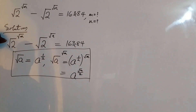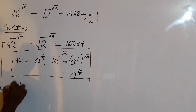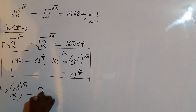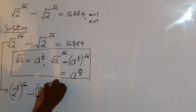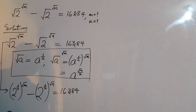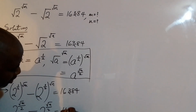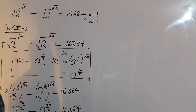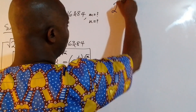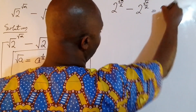So the question becomes: 2 to the power of root m over 2, minus 2 to the power of root n over 2, equals 16384. Now 16384 is 2 to the power of 14, so this becomes 2 to the power of root m over 2, minus 2 to the power of root n over 2, equals 2 to the power of 14.